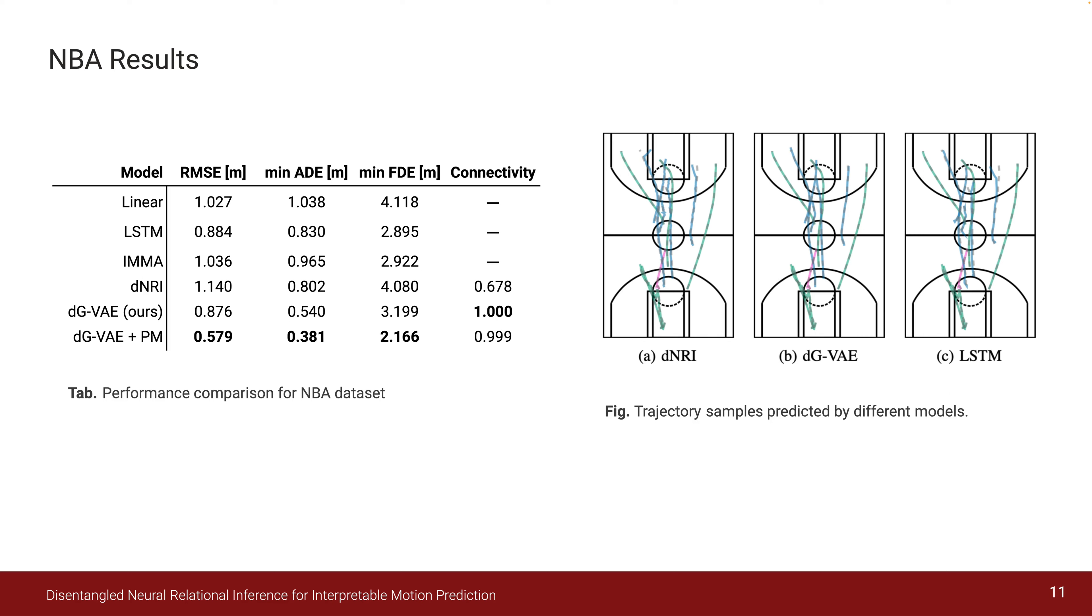The NBA dataset features the trajectories of all 10 players and the ball. Each trajectory has 50 time steps at a frequency of 3 hertz, which translates to a prediction horizon of about 3.6 seconds. The right figure shows trajectories generated by each model.